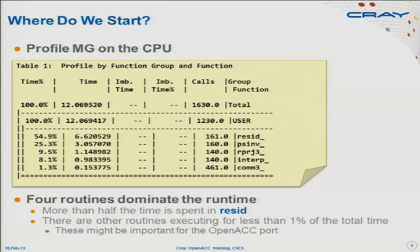The first thing you want to do is learn about the application. You can scroll through the code and try to work out what calls what, but profiling the code running on the CPU is a very good start. This is a profile generated with the CrayPAT program — the instructions for the practical let you generate such a profile yourself. You could also use GPROF or other profilers. The profile tells you how much time is spent in each routine, giving you a good feeling for which routines take most of the time.